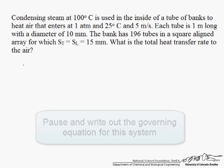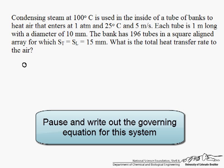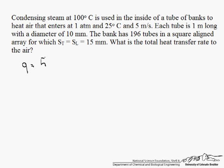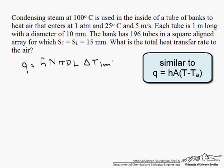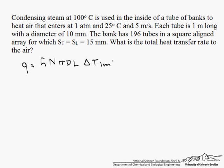So let's start with our governing equation. We're looking for Q, and Q is our heat transfer coefficient times the number of tubes in the tube bank, times the surface area of one of the tubes, times our delta T log mean. The reason we use a log mean temperature rather than just a delta T is because there can be such a difference from the inlet to the outlet.